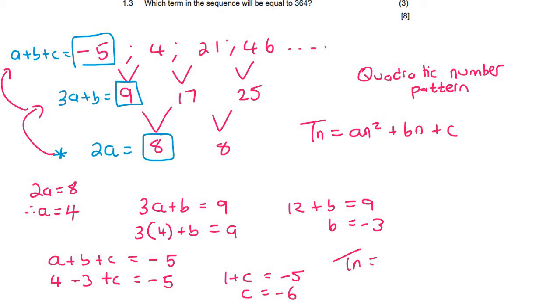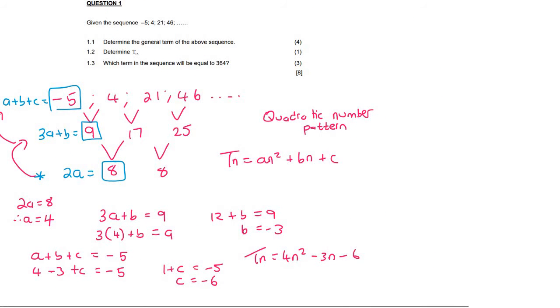So we can now say that Tn is equal to 4n squared minus 3n minus 6. Now if you are in a test situation, you need to quickly make sure that you've done everything correct. So what I would advise you do is you try to test one of these numbers.